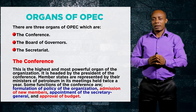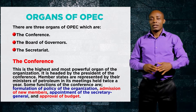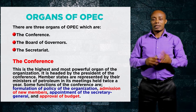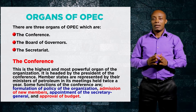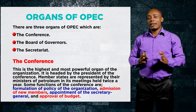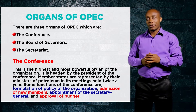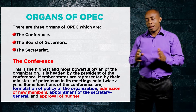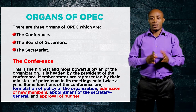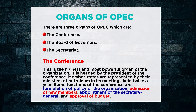OPEC has three main organs: the Conference, the Board of Governors, and the Secretariat. The Conference is the highest and most powerful organ, headed by a President. Member states are represented through their petroleum ministers, and the Conference meets twice a year. Its functions include formulation of the organization's policy, admission of new members, appointment of the Secretary-General, and approval of the budget.